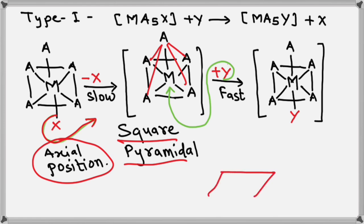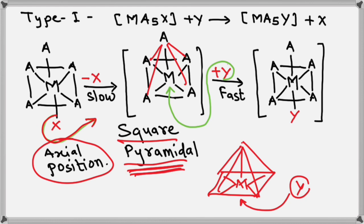So intermediate, in this case, is square pyramidal in shape. So this central metal present at this position. Then later, Y will come from this side with the formation of the final product. Overall, the point here is the shape of intermediate is what? Square pyramidal. So let us go for case number two.